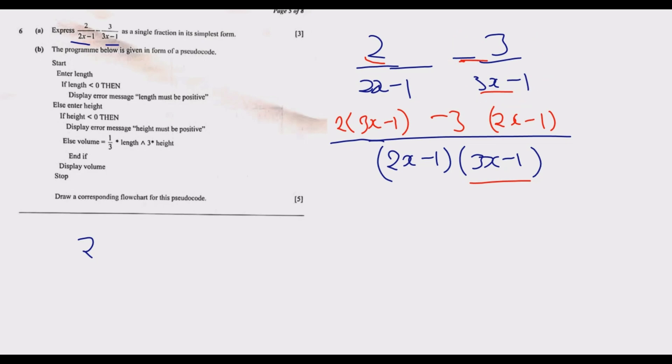It's just a matter of expanding. You have 2 times 3x, which is 6x, then minus 2 times 1 is minus 2. Then we continue: negative 3 multiplied by positive 2x will get minus 6x. Then negative 3 multiplied by negative 1, so remember it's negative 3 multiplied by negative 1. That's what people mess up, so negative 3 times negative 1 gives positive 3.